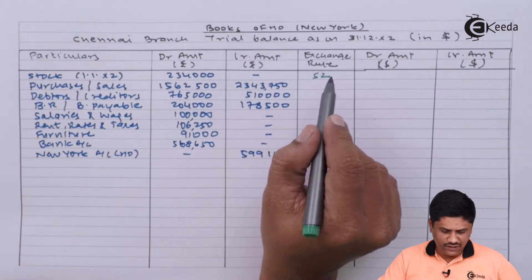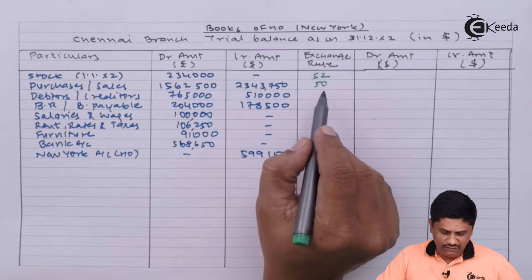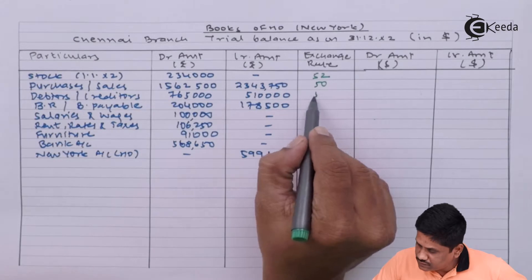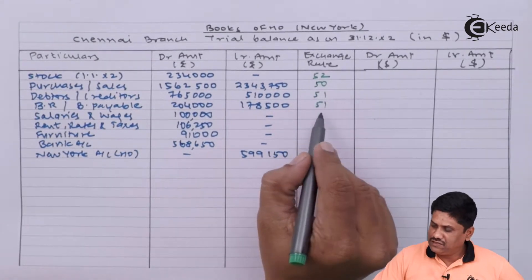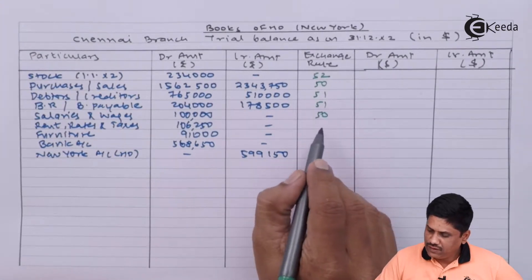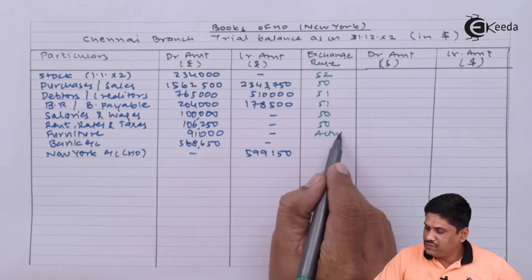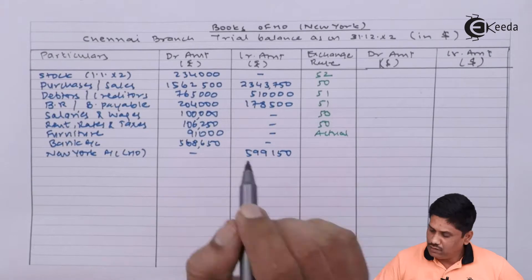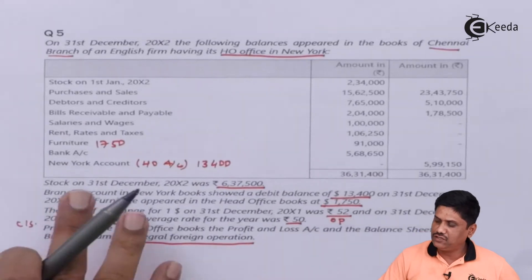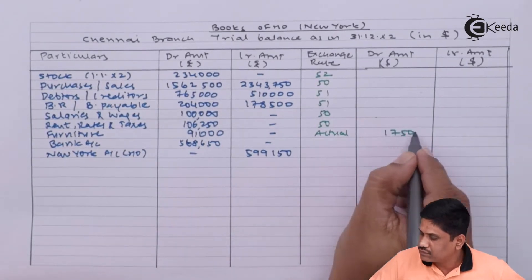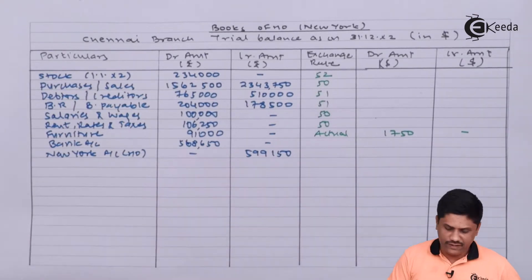Purchases and sales — average rate will be applicable, which is 50. Debtors and creditors — closing rate will be applicable, which is 51. Bills receivable and bills payable — closing rate applicable, 51. Salaries and wages — average rate applicable, 50. Rent, rates and taxes — average rate, 50. Furniture — actual rate from head office books, because it is already given ready-made in dollars as 1,750. Bank account — closing rate applicable, which is 51.